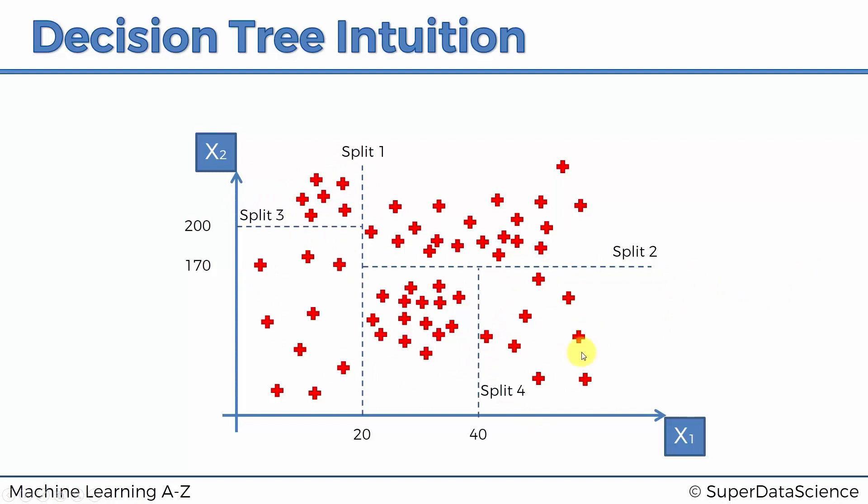Now, how and where these splits are conducted is determined by the algorithm. And it actually involves looking at something called the information entropy, and it is a mathematical concept, it is quite complex. So it basically means when I perform this split, is this split increasing the amount of information that we have about our points?